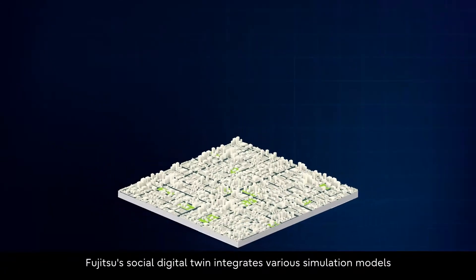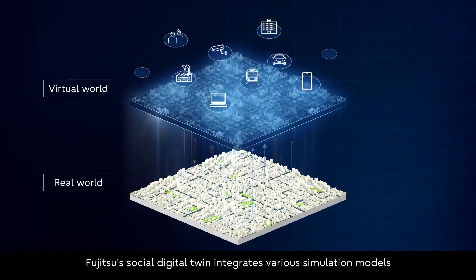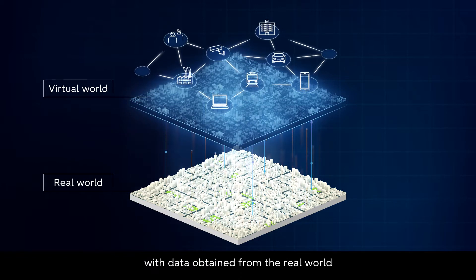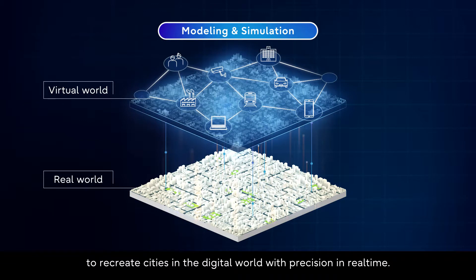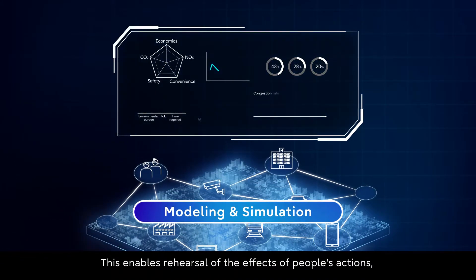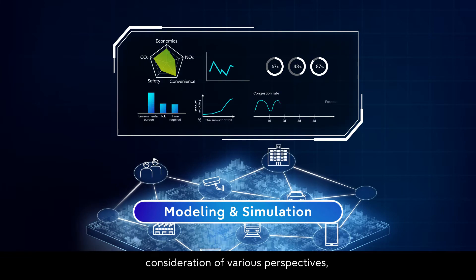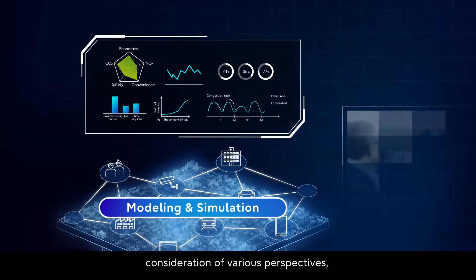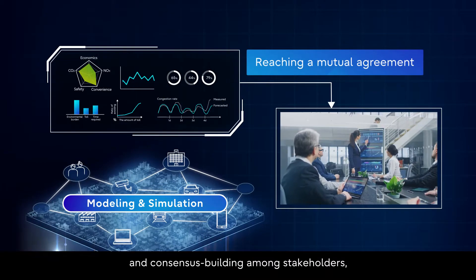Fujitsu's Social Digital Twin integrates various simulation models with data obtained from the real world to recreate cities in the digital world with precision in real time. This enables rehearsal of the effects of people's actions, consideration of various perspectives, and consensus building among stakeholders.